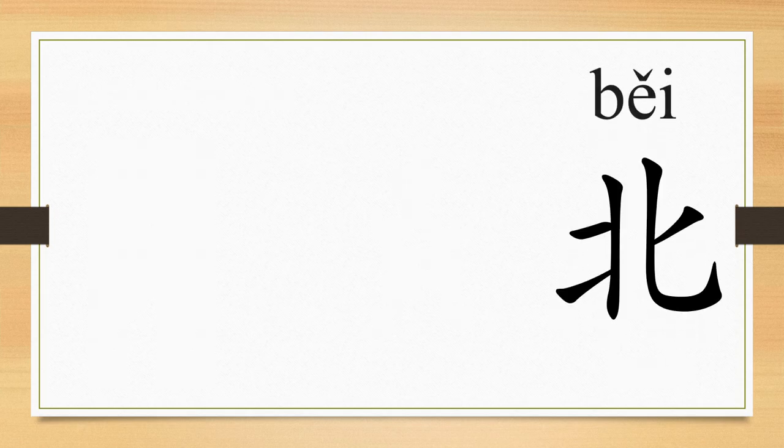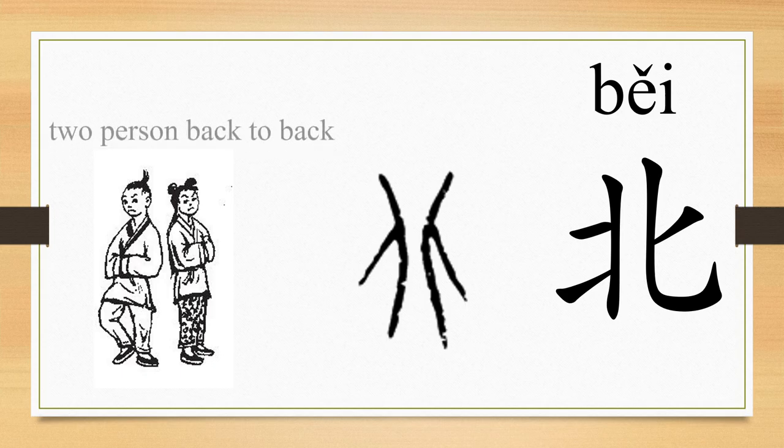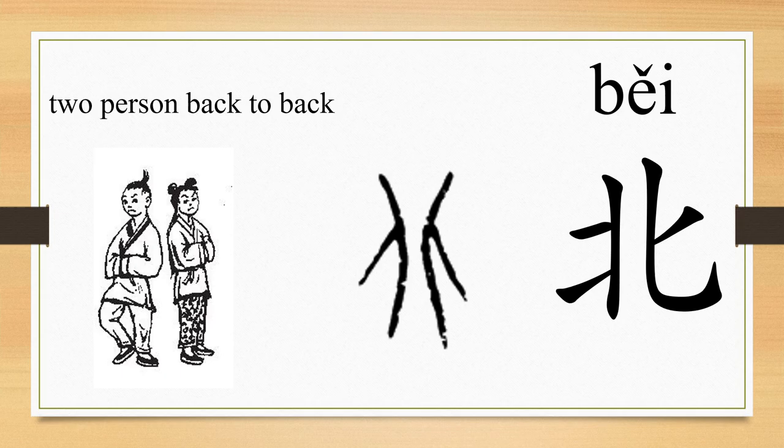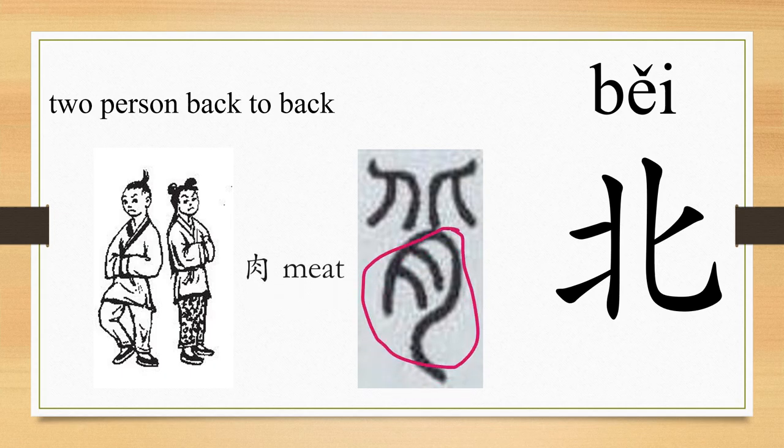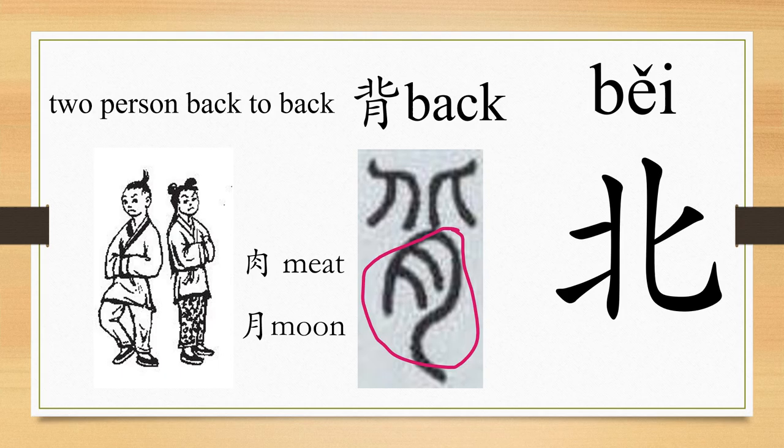The ancient Chinese character for bei comes from the image of the two person back to back. So the original meaning for bei is a person's back. And then it extends to the meaning of against, violating. And then the writing changes with one more radical, that is rou, which means meat. And since rou and yu have very similar writing in ancient Chinese characters, so people created a new character, that is bei, which combines bei and yu to indicate back. And the bei nowadays was borrowed to indicate the opposite of south, that is north.